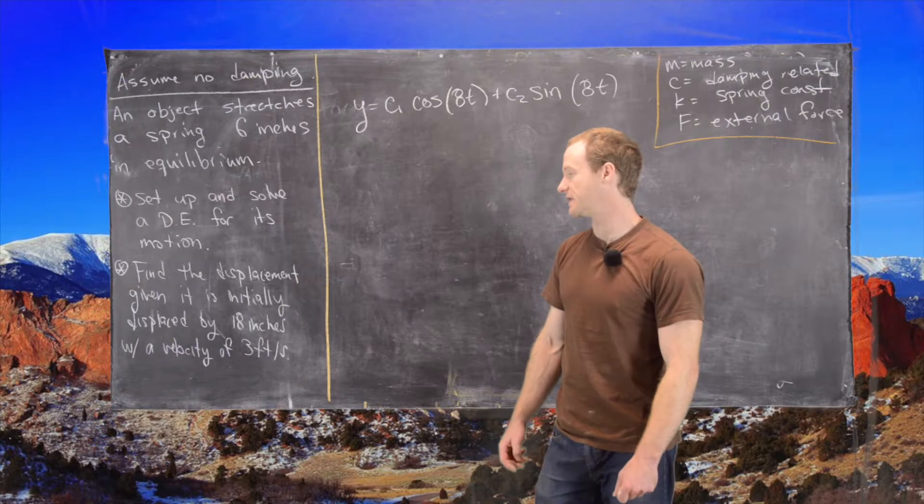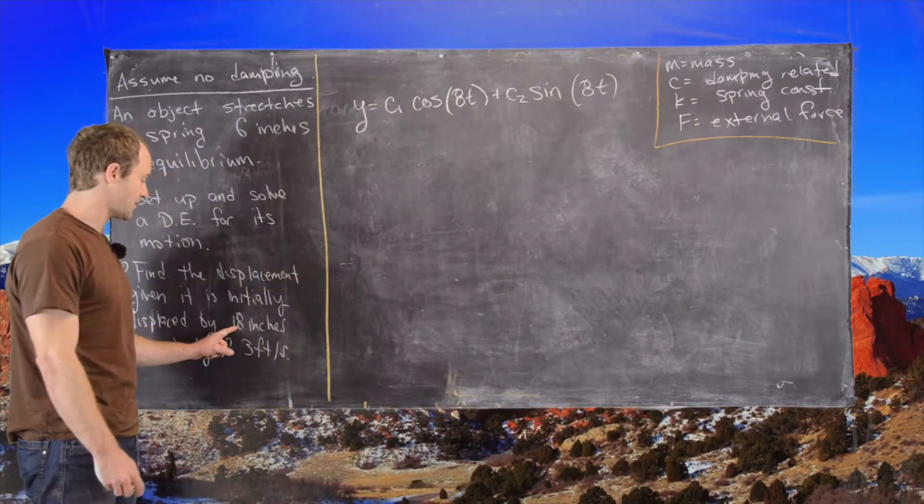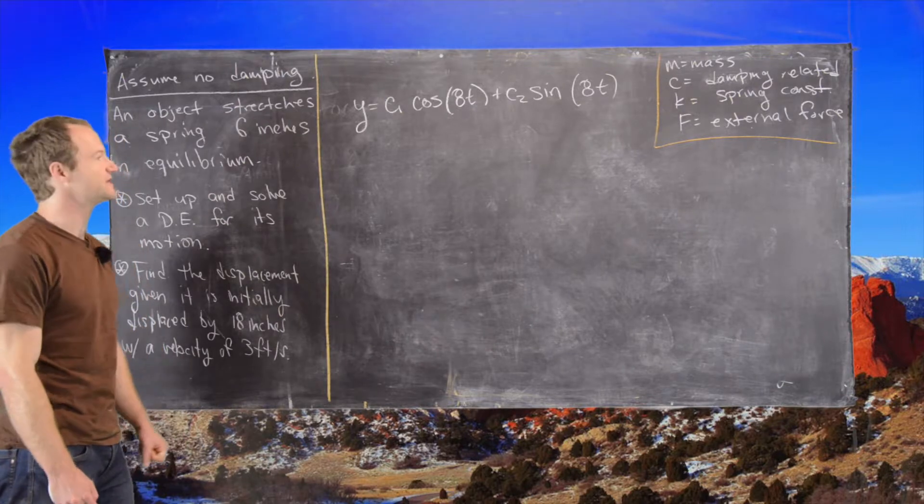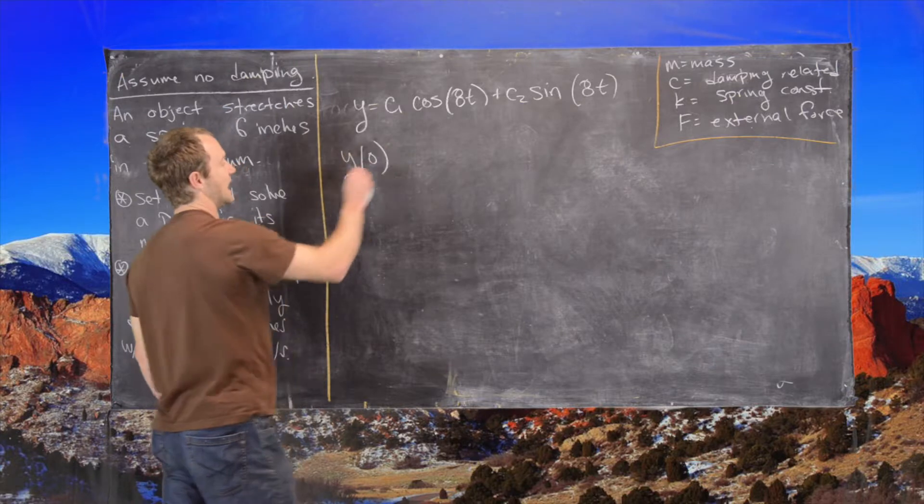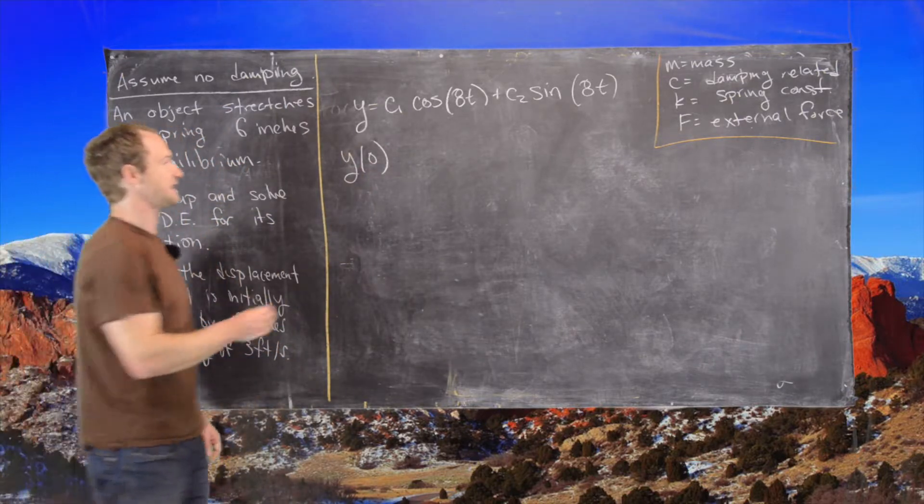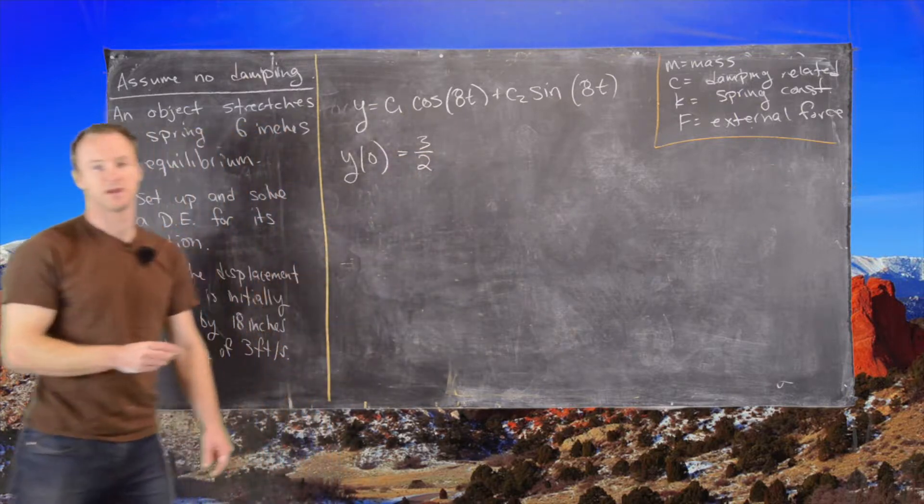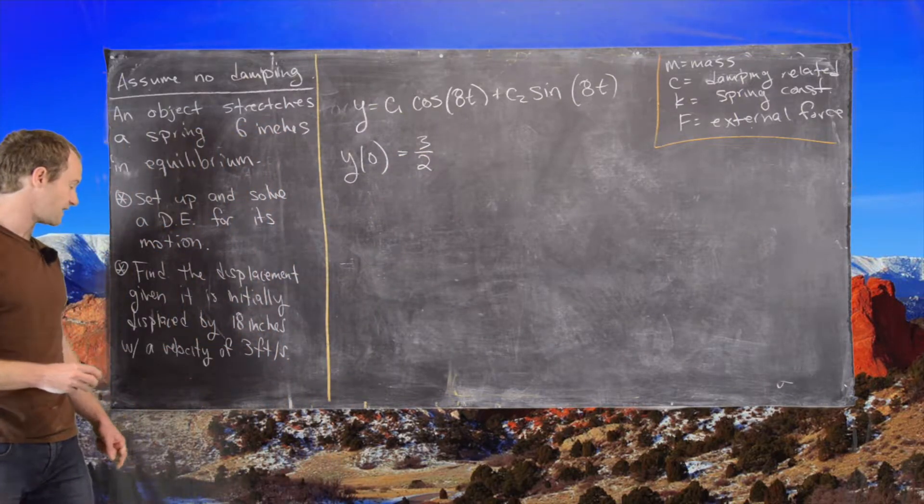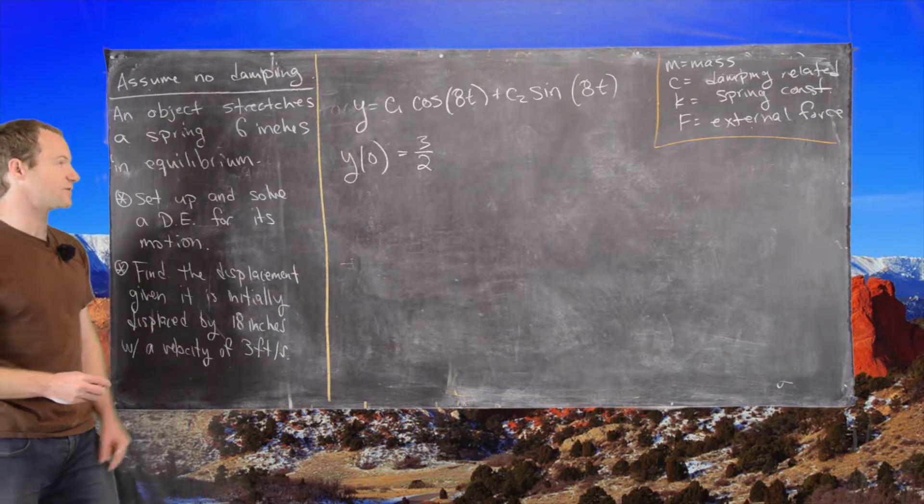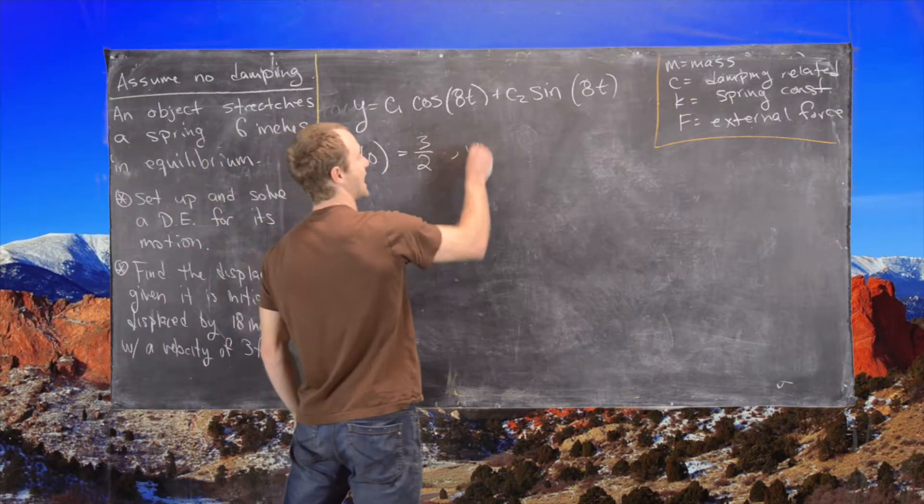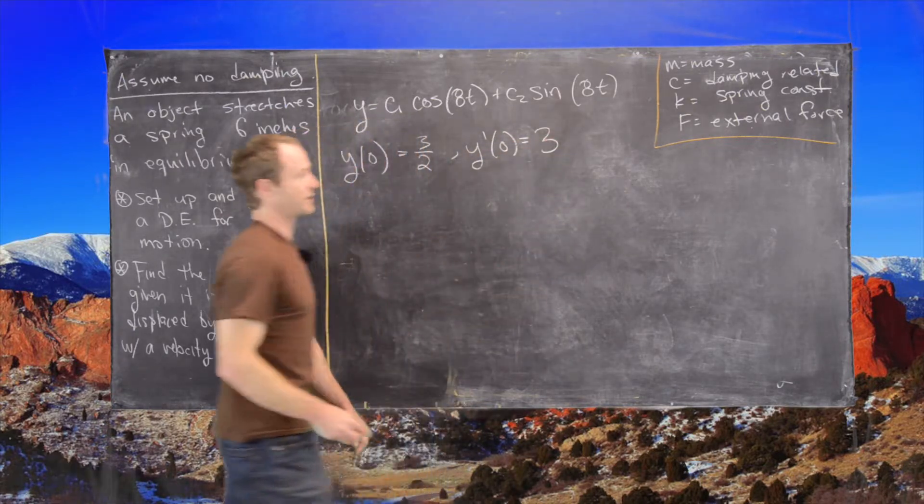So let's see how we can do that. So since everything has been in feet, we probably want to write this 18 inches as 1.5 feet. And now notice that's the same thing as having an initial displacement of 18 inches, which is 3 over 2, in other words 1.5 feet. And then finally we know our velocity is 3 feet per second. So that's the same thing as y prime of 0 is equal to 3.